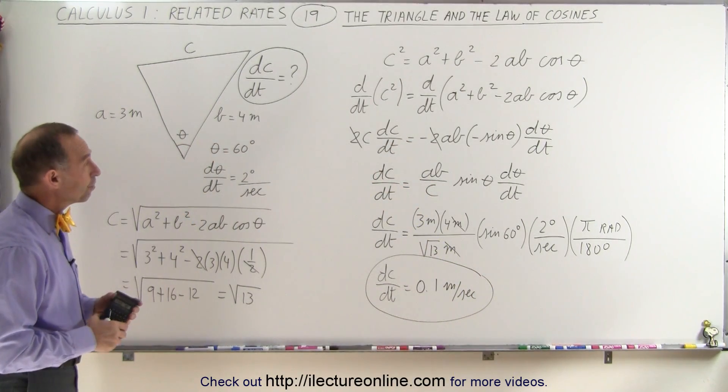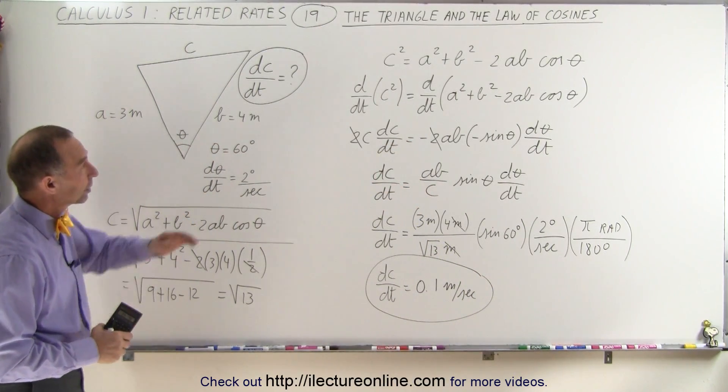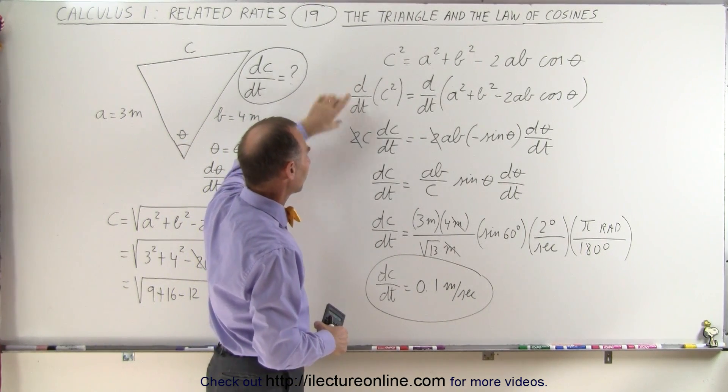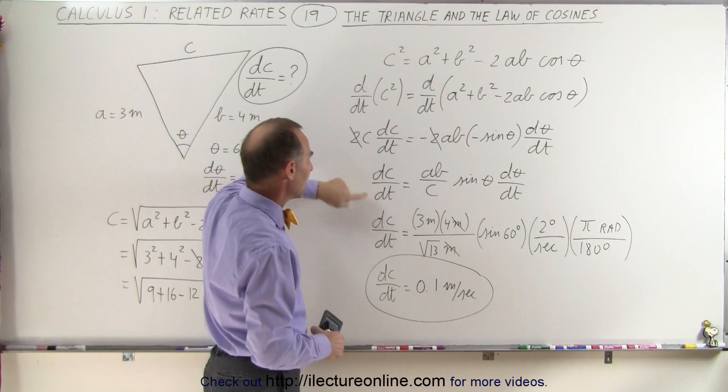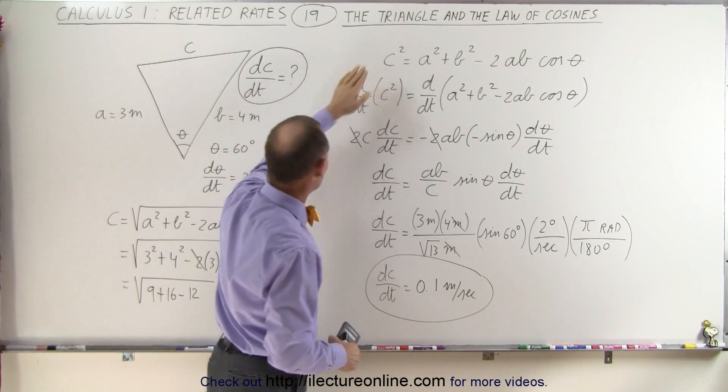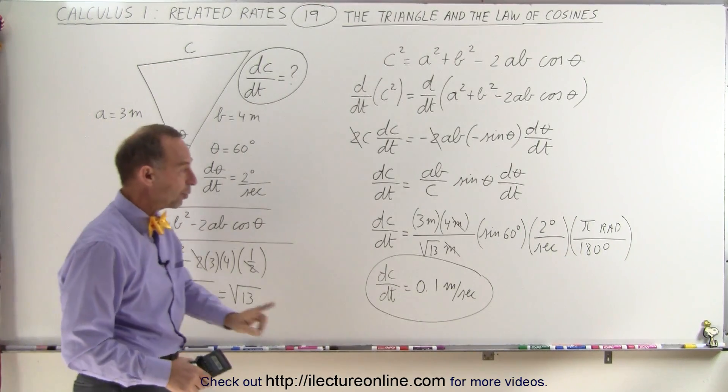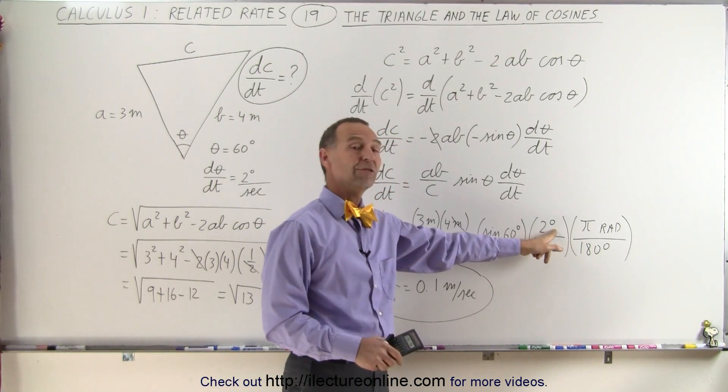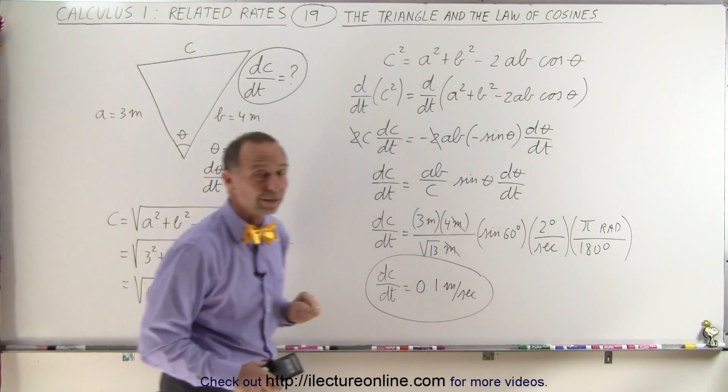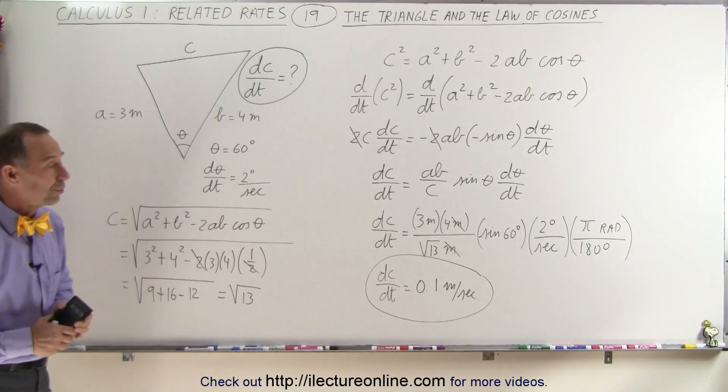All right, so again, what we do is we take the law of cosines, we take the derivative with respect to time of both sides, we solve for dC/dt. Notice that we do need the value for C, which means we need to use the law of cosines again to find the value of C. And don't forget, when we're given the rate of change in degrees per second, we have to change it to radians per second. And that's how we do that.